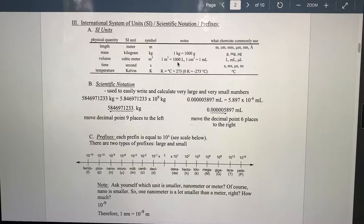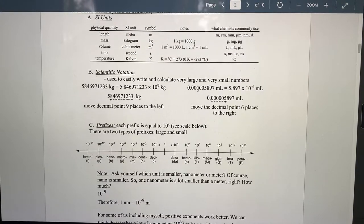One liter is a thousand ml, or cubic centimeters, also known as cc. Second is units of time, and Kelvin is the standard units of temperature. Conversions, you take Celsius, temperatures in Celsius, you add 273, 0.15 to be exact, and you get the Kelvin temperatures.